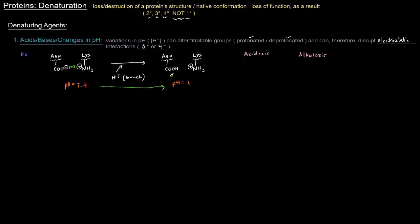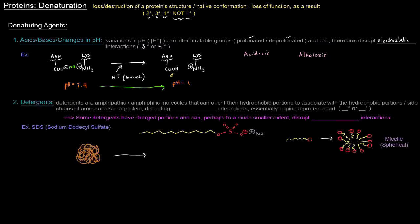Next up, detergents. Detergents are amphipathic or amphiphilic molecules, which basically means that they have polar and nonpolar portions. They can orient their hydrophobic portions to associate with the hydrophobic portions or side chains of amino acids in a protein, therefore disrupting hydrophobic interactions. And then, essentially, they'll rip apart a protein. This is tertiary or quaternary structure because hydrophobic interactions hold together tertiary and quaternary structure.